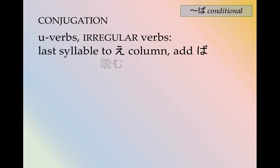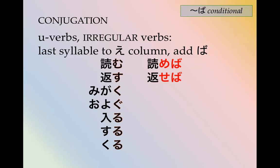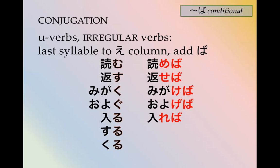For う verbs, you change the last syllable to the e column and then add ば. So 読む becomes 読めば, 書く becomes 書けば, 磨く becomes 磨けば, 泳ぐ becomes 泳げば, 入る becomes 入れば, する becomes すれば, くる becomes くれば.